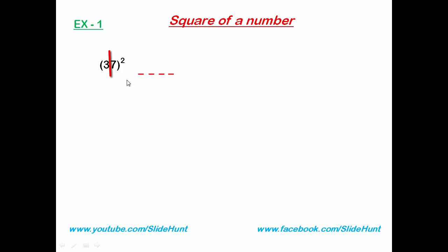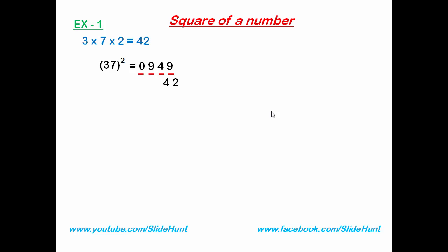3 squared is 9 — write 09. 7 squared is 49. Next, multiply the two digits and double it: 3 times 7 is 21, and 21 times 2 is 42. We place this product starting from the second-rightmost digit. Adding these up: 9, then 4 plus 2 is 6, then 9 plus 4 is 13 so write 3 carry 1, and 0 plus 1 is 1. So the square of 37 is 1369.